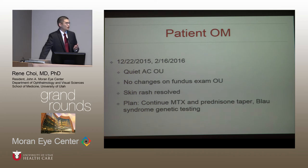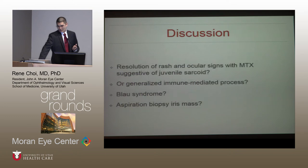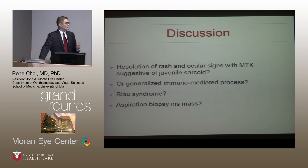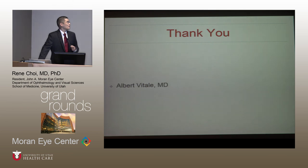He is planning on getting Blau syndrome genetic testing in the near future. The diagnosis remains up in the air. Discussion questions include: does the resolution of ocular findings and skin rash after starting methotrexate suggest juvenile sarcoid or another immune-mediated process? Blau syndrome, which mimics juvenile sarcoid and is characterized by arthritis, skin manifestations, and ocular findings, is also a consideration. Additionally, was an aspiration biopsy of the iris mass really necessary in the early workup, and is it safe? Thanks to Dr. Vitale for the opportunity to present this case.